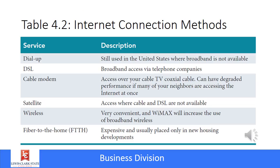Connecting computers or networks to the internet is very important because almost everything we do on computers uses the internet. This chart gives you some different ways that you can connect to the internet, and it's kind of a hierarchy of slow to fast. The slowest and most ancient, but still used a little bit, is dial-up. Dial-up uses a modem and it's very, very slow — not very practical for almost anything you would do on the internet today.